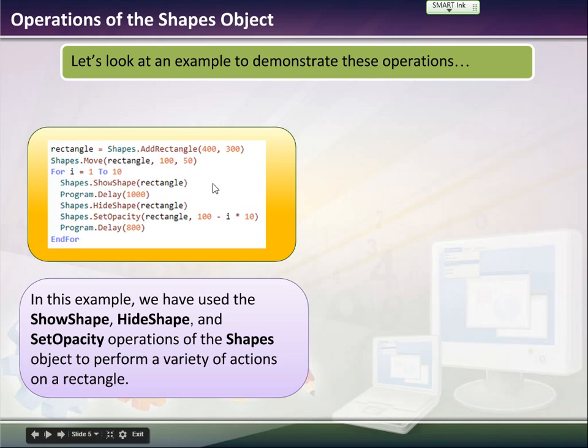Then we're going to use a for loop and so we set i from 1 to 10. If you guys remember, when we loop through the first time, i equals 1. When we loop through the second time, i equals 2. It shows the shape of the rectangle. Then there's a little bit of a delay. That just counts for, I think it's 1,000 milliseconds, which is like one second. Then it hides the shape of the rectangle.